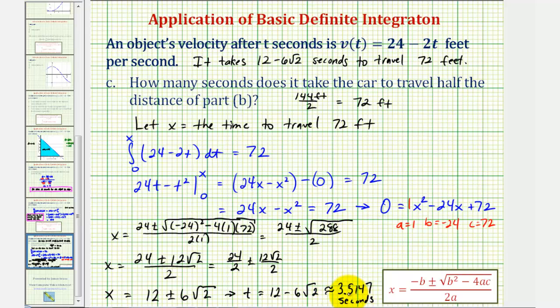We shouldn't give the rounded value for the time in seconds unless the directions tell us to. So we'll go ahead and enter 12 - 6√2 seconds.